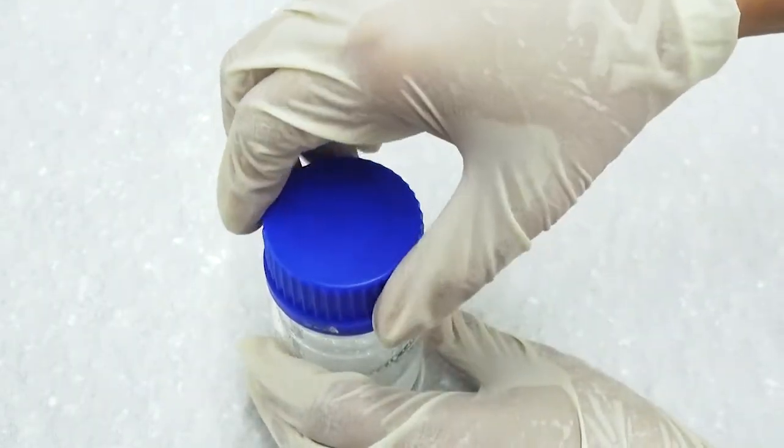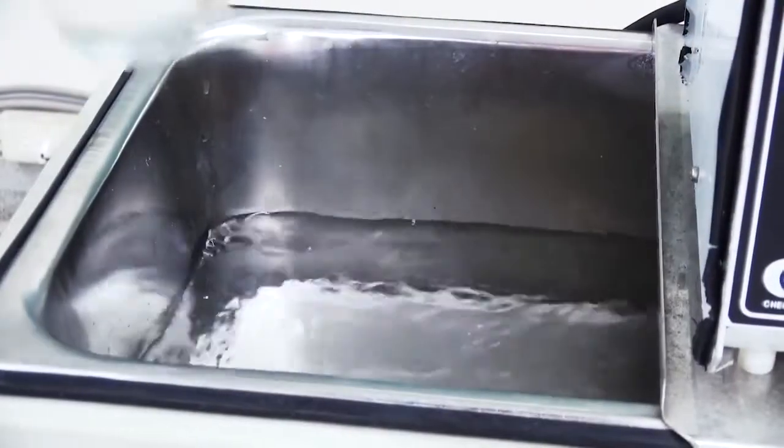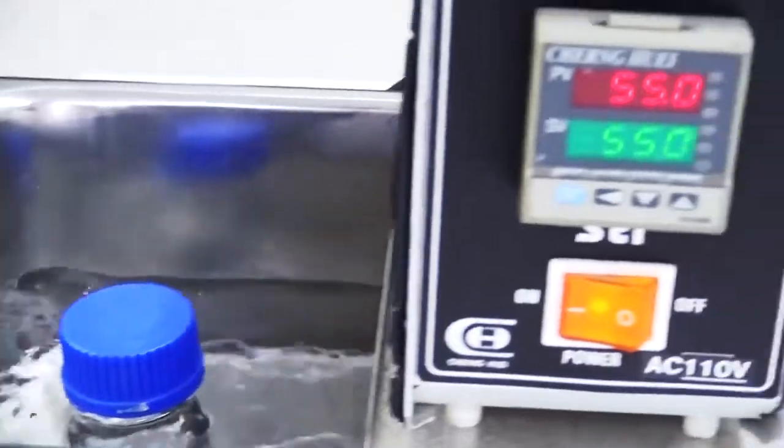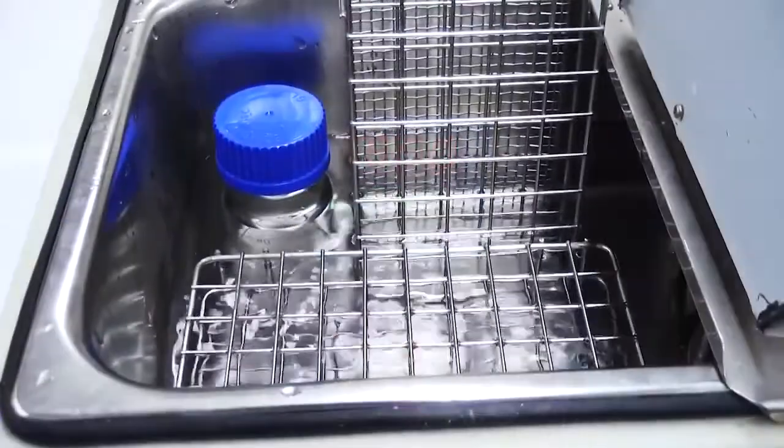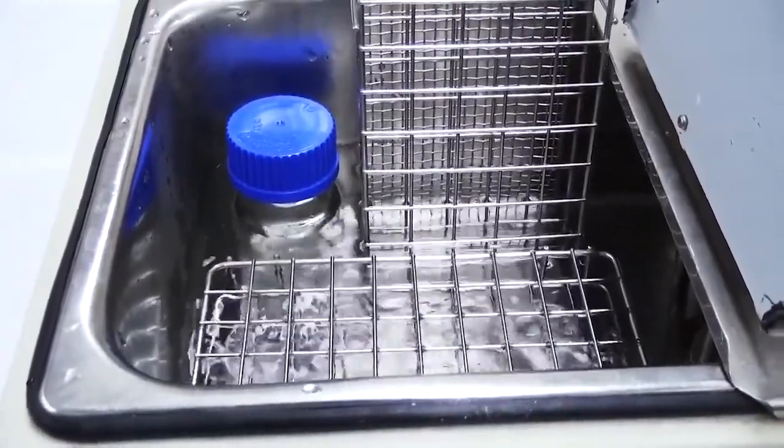Once the agarose powder is completely dissolved, fasten the cap tightly. Place the sealed bottle into the water bath so the solution will cool down to the proper temperature without solidifying. Prevent the bottle from floating in the water bath. Make sure the water bath level is higher than the gel solution level.